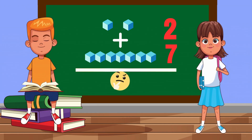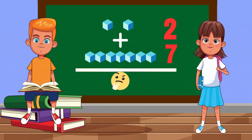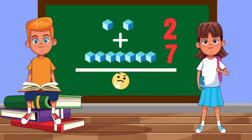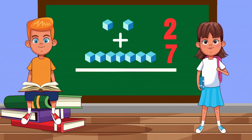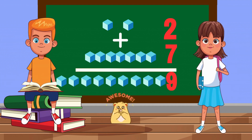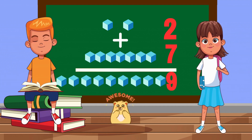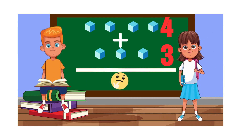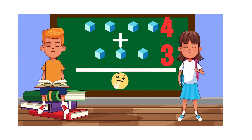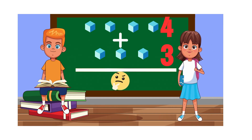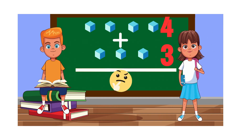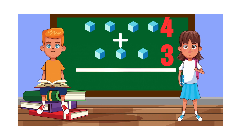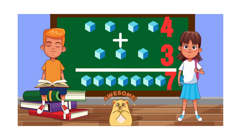2 cubes plus 7 cubes equals 9 cubes. 4 cubes plus 3 cubes equals 7 cubes.